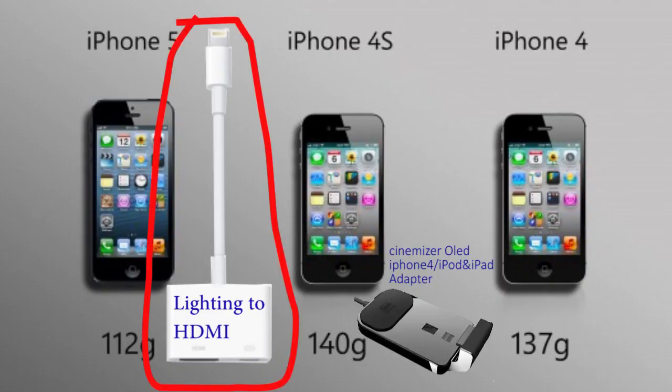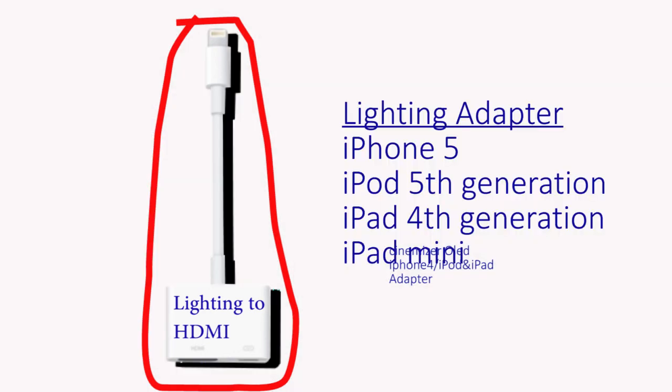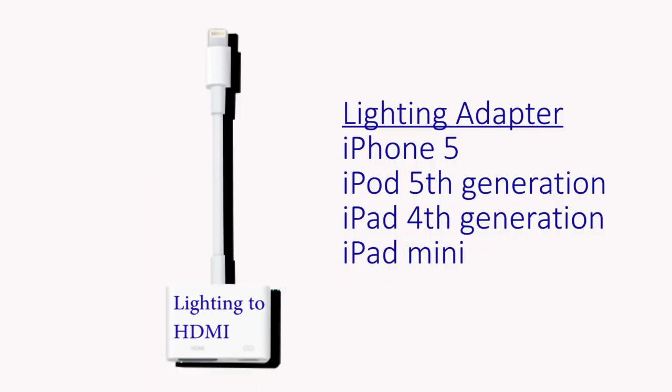The next part is about iPhones. The iPhone 5 has a special port called the Lightning connector. You adapt the Lightning to HDMI and then you can get it into the Cinemizer. These are the phones that use the Lightning adapters.